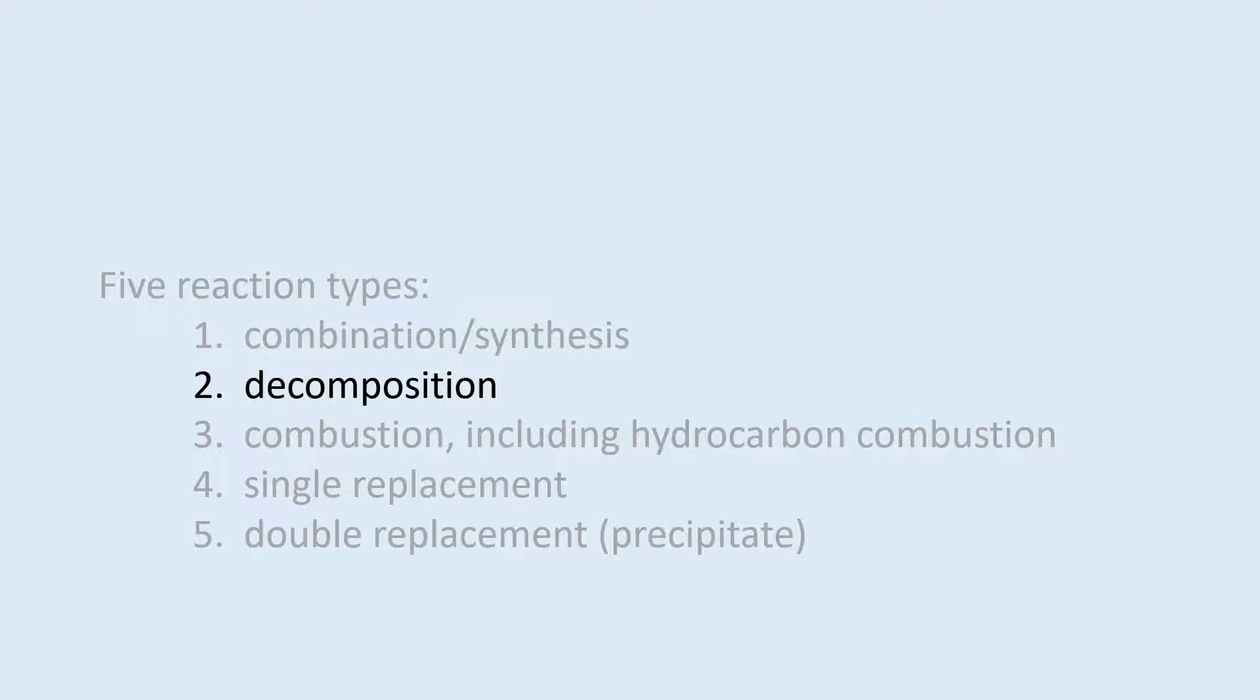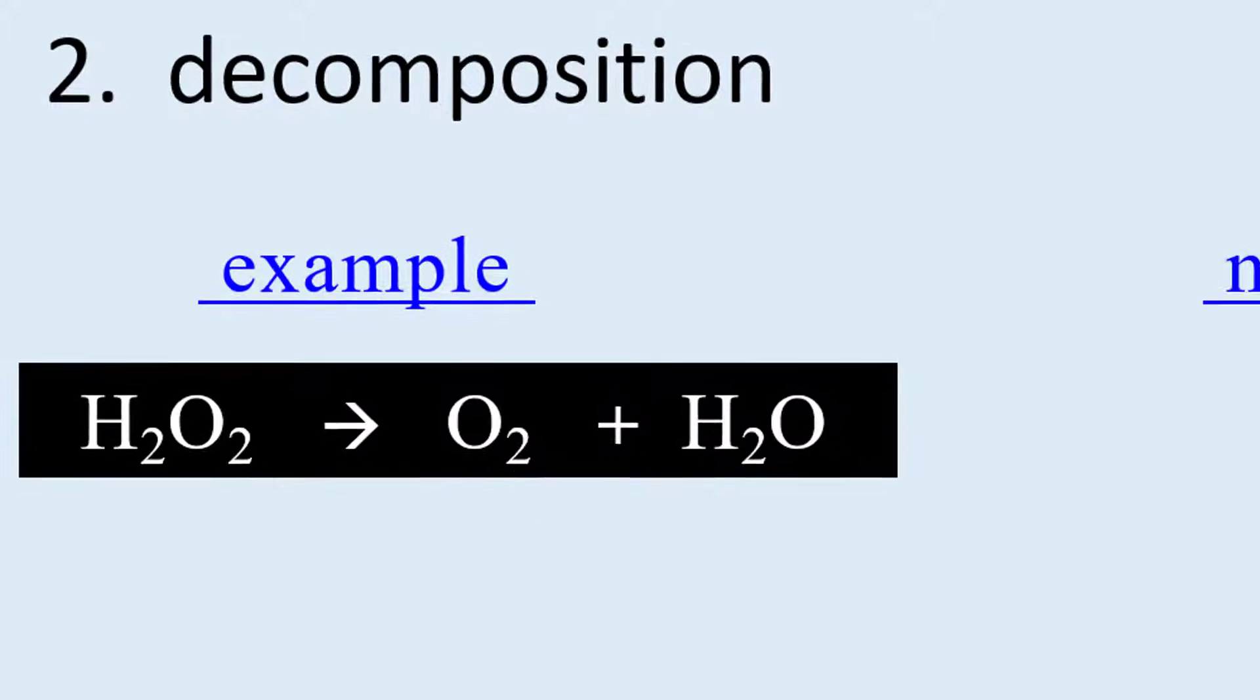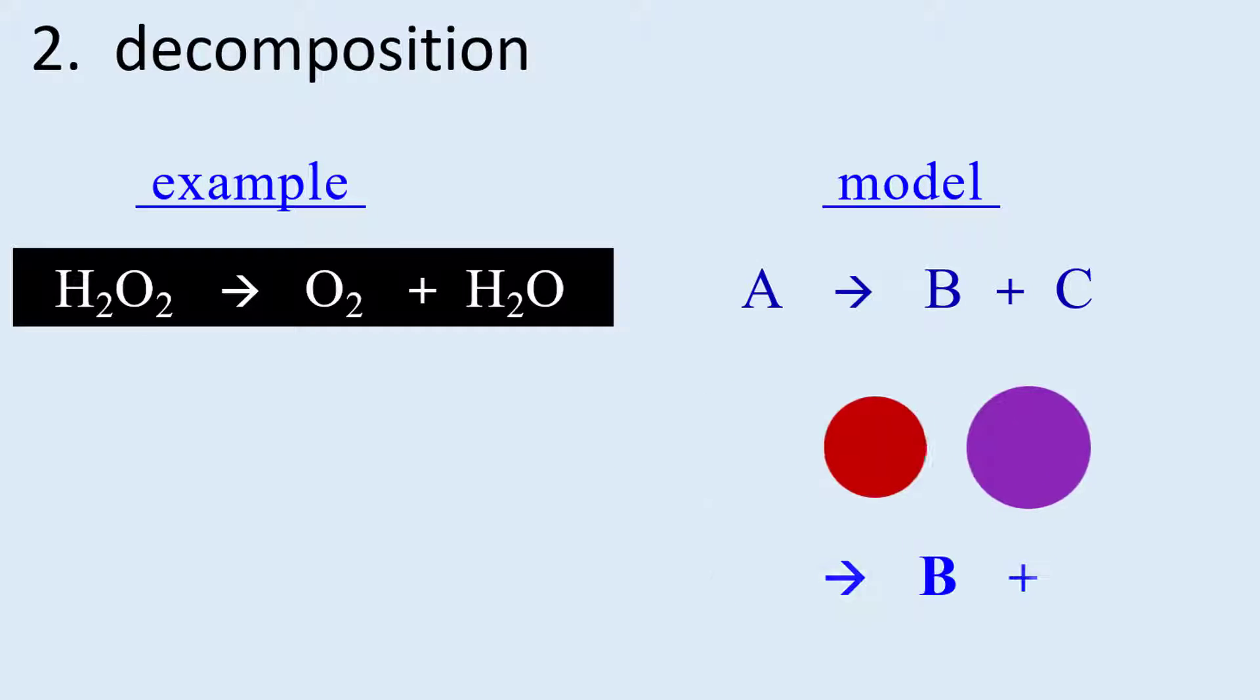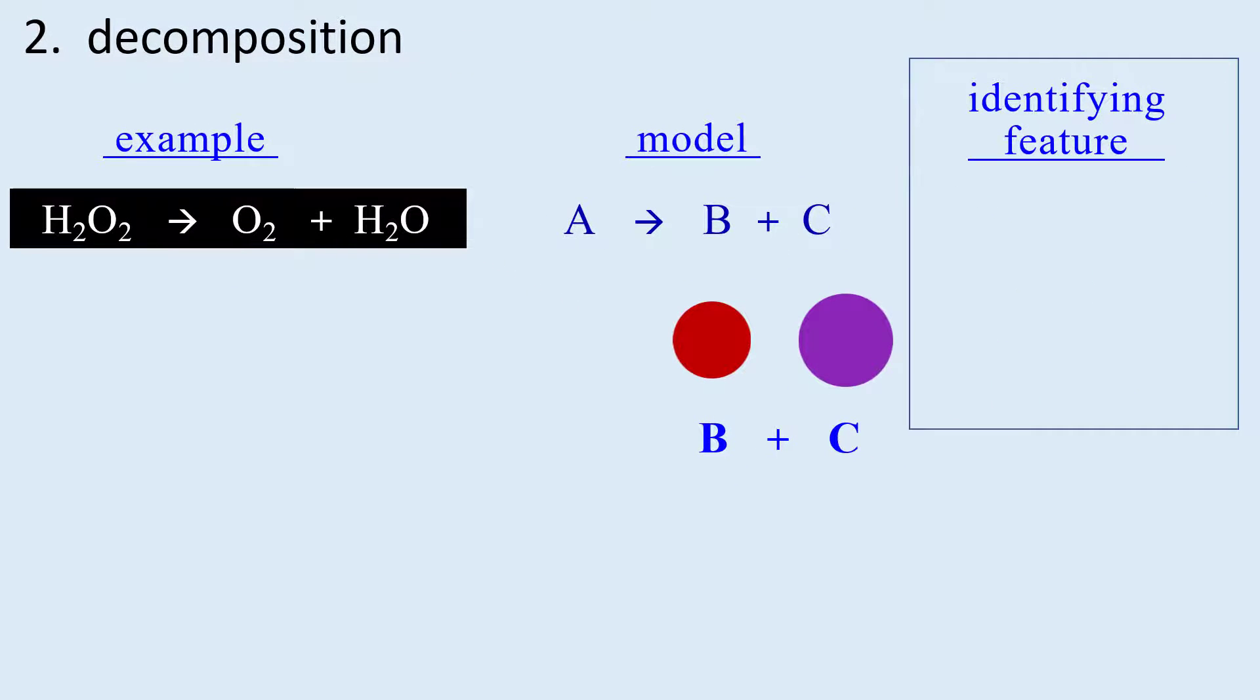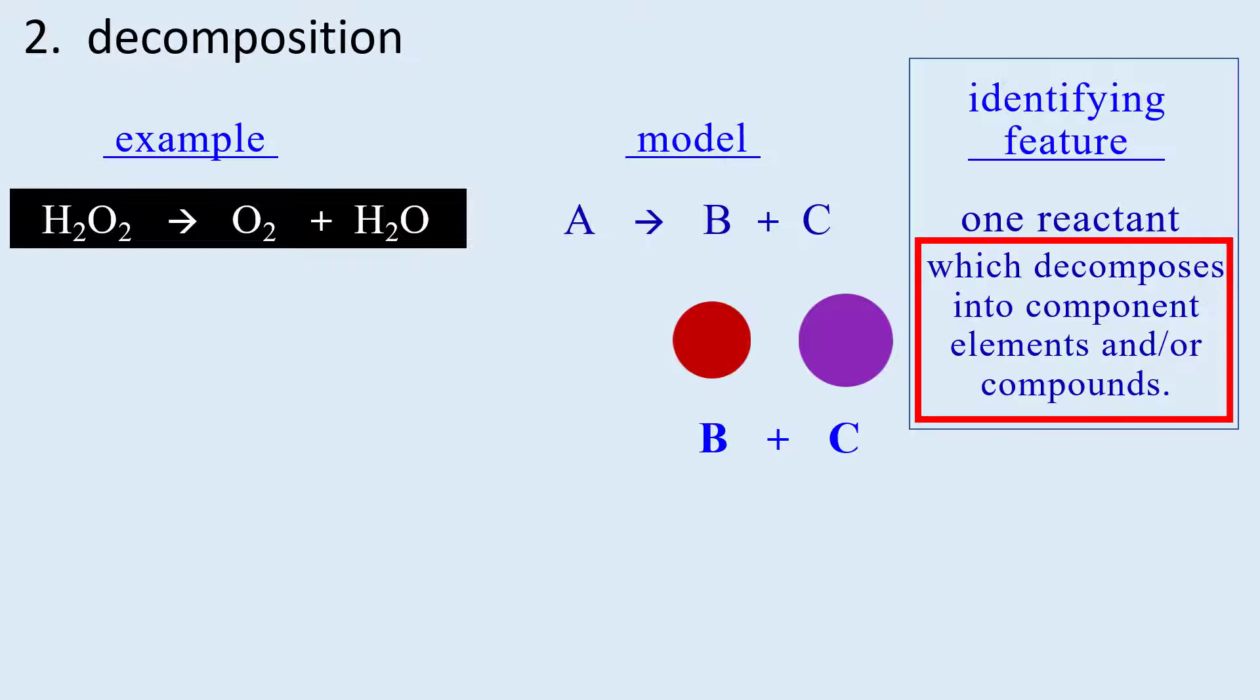Second reaction type is decomposition. In the example, hydrogen peroxide decomposes into two substances, oxygen and water. The model is a single compound breaks apart or decomposes into two substances, and the identifying feature is seeing that there is one reactant which breaks apart into component substances.